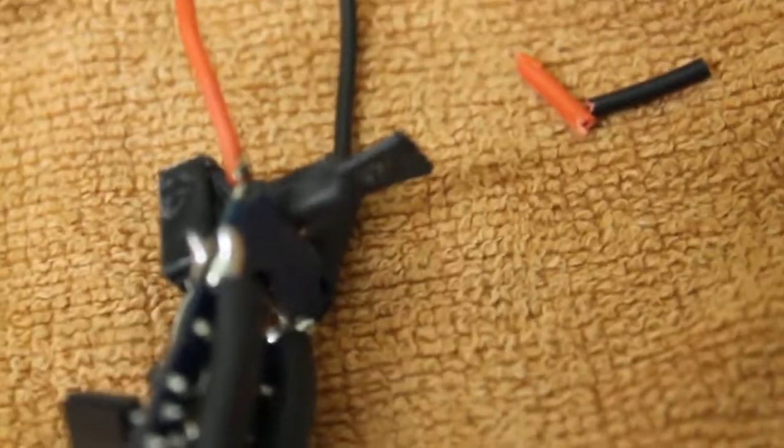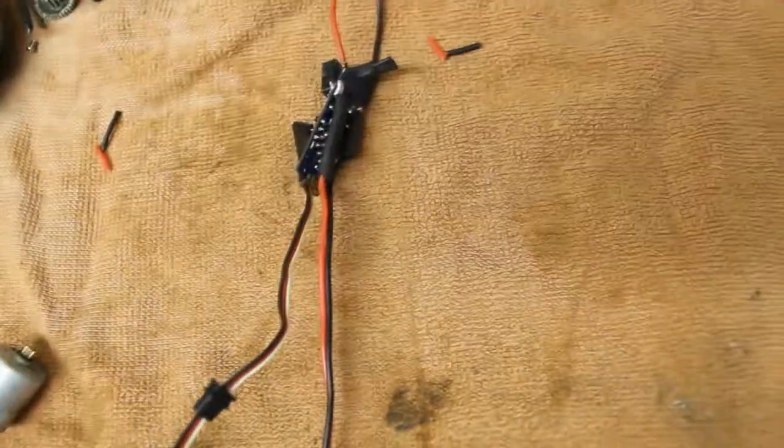So that little piece sticking up right there is the potentiometer. You'll know it's centered when your lights either turn off while the switch is on and it's plugged in to power.